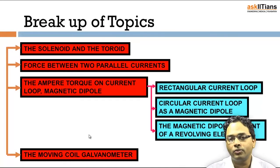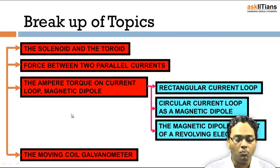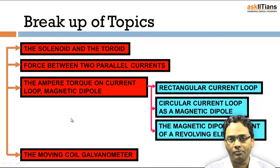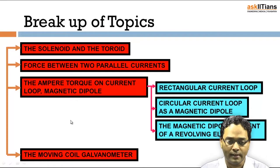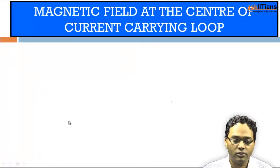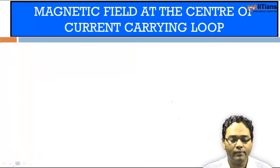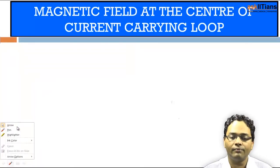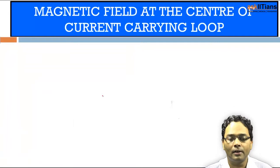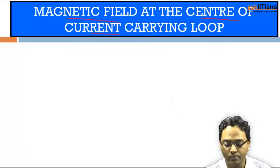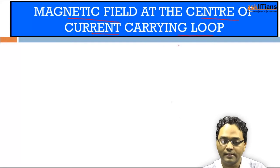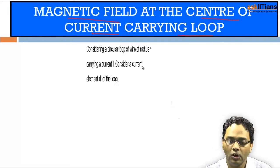Finally, we are going to conclude with the moving coil galvanometer. So let's get started. First, we need to understand the magnetic field at the center of a current-carrying loop.